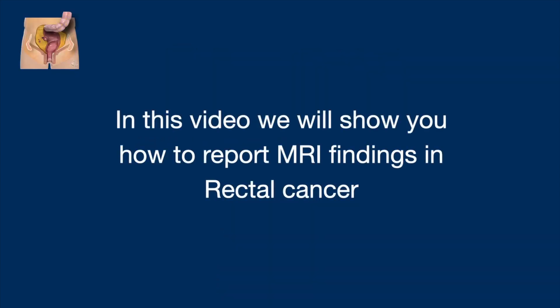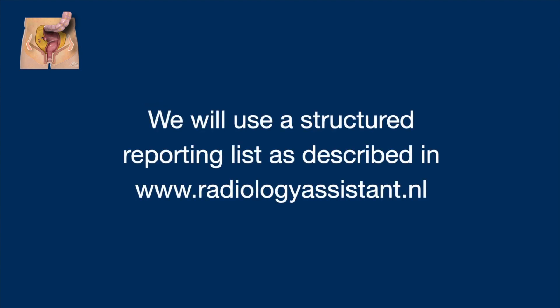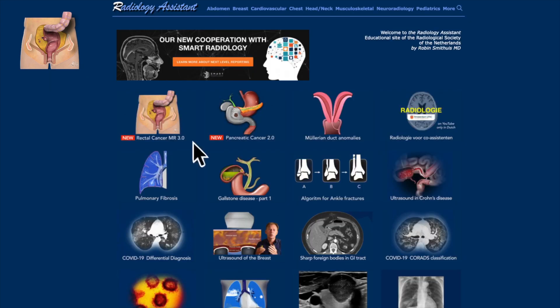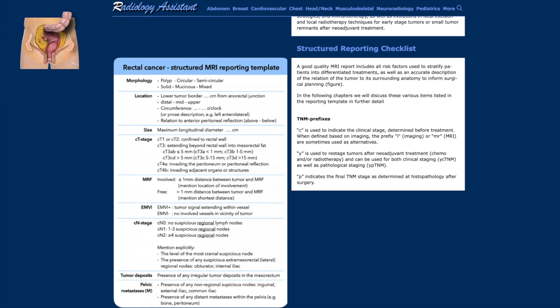In this video we will show you how to report MRI findings in rectal cancer. This rectal cancer is located in the high or upper rectum and we will discuss the relationship to the sigmoid, mesorectal fascia, and peritoneum. We will use a structured reporting list as described in the radiology assistant — go to the website, click on rectal cancer, structured report list, and there you have it.